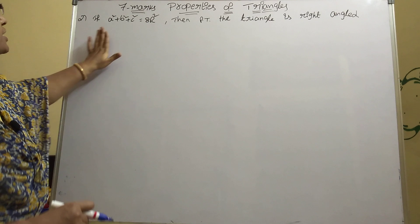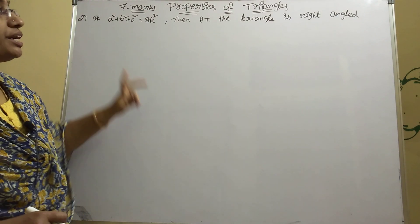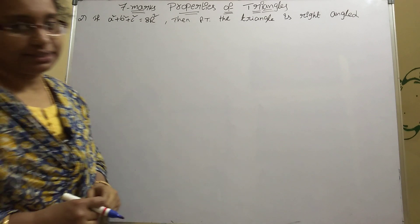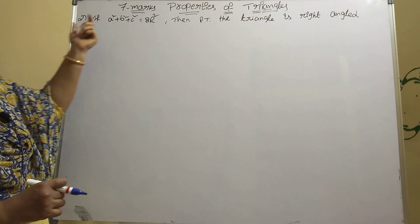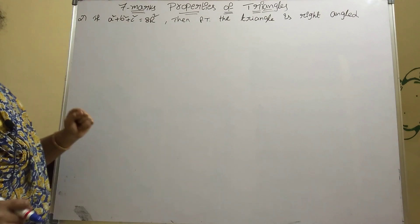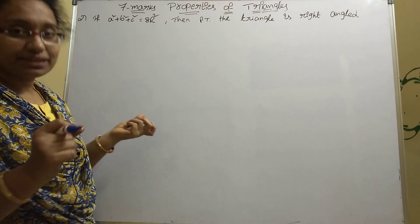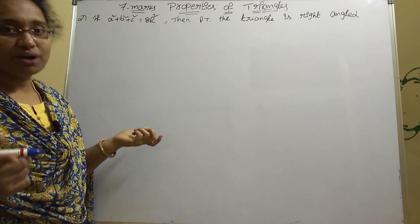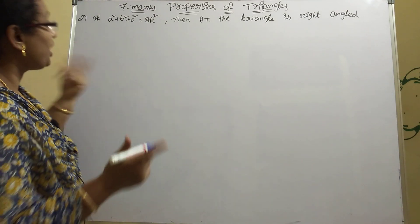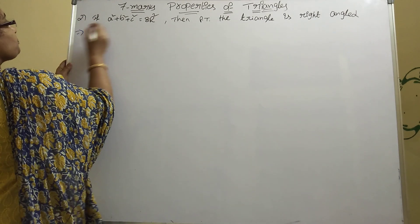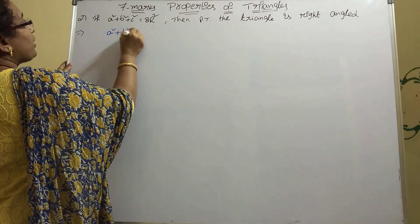Problem one: if a² + b² + c² = 8R², then prove that the triangle is a right-angle triangle. Given: a² + b² + c² = 8R². In properties of triangles, the formulas are: a = 2R sinA, b = 2R sinB, c = 2R sinC.